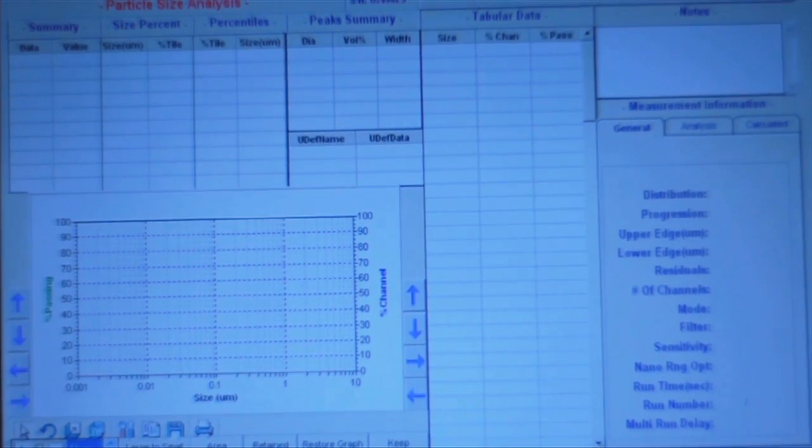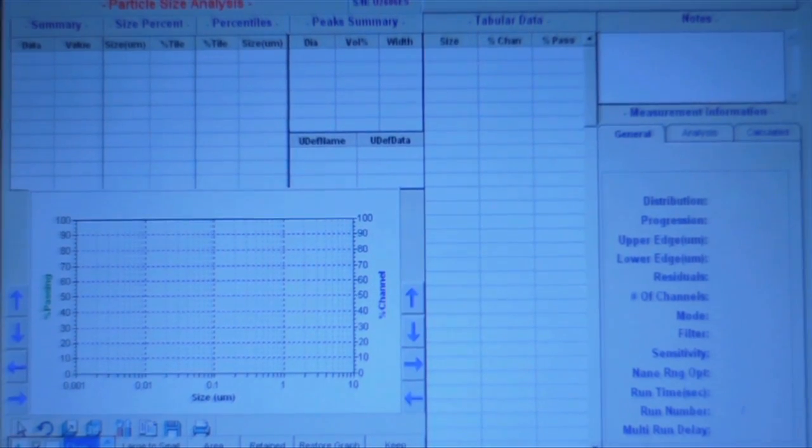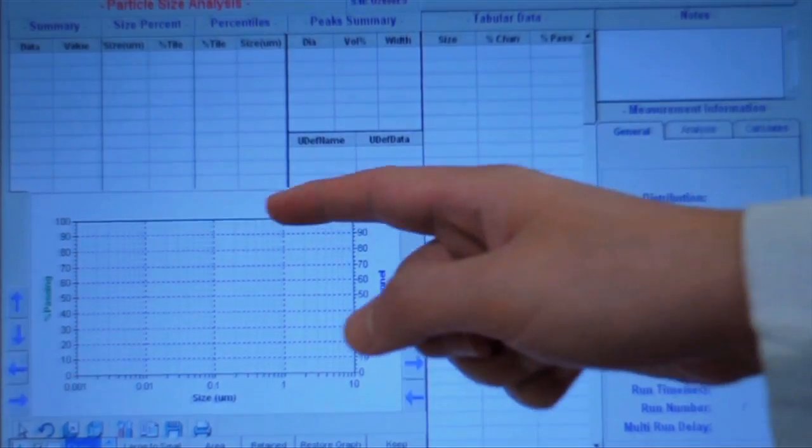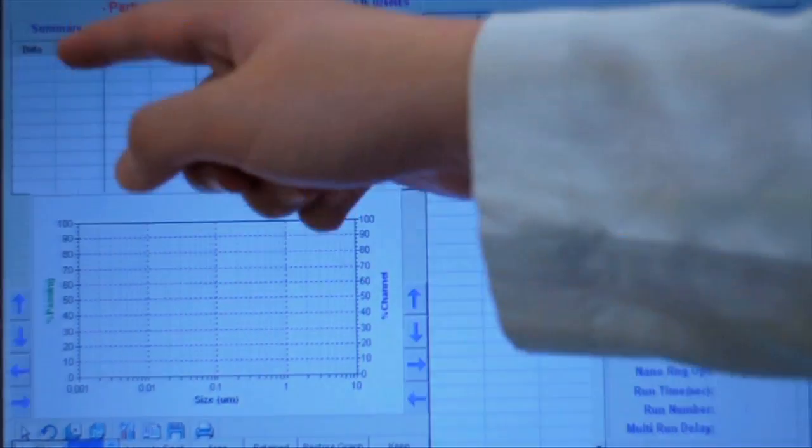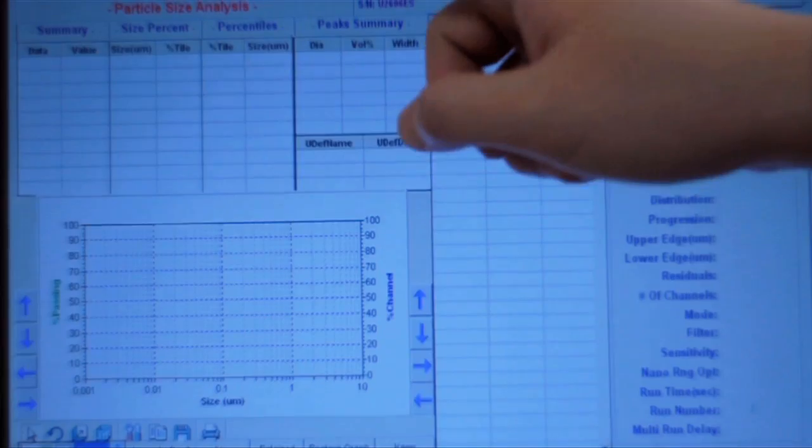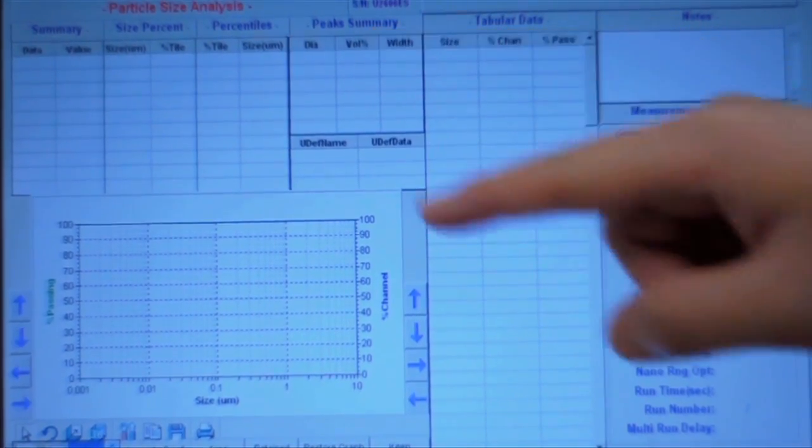This is the Flex software that comes with the Nanotrack. It is 21 CFR Part 11 compliant. The software displays various information about the analysis such as distribution curve, a summary of the statistical data such as average particle size, sizing information such as D10, D50, D90, and details about the peaks.